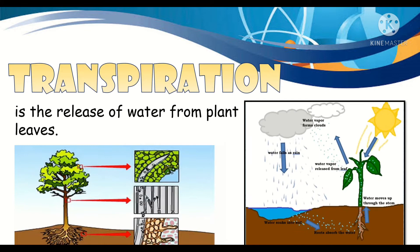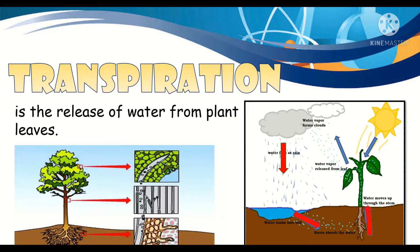When water falls as rain, water soaks into the soil and roots absorb the water. Water then moves up through the stem. When this water from leaves gets heat, water vapor is released from the leaf. Then water vapor forms clouds, and the cycle will repeat.